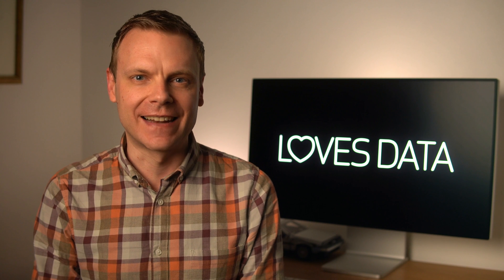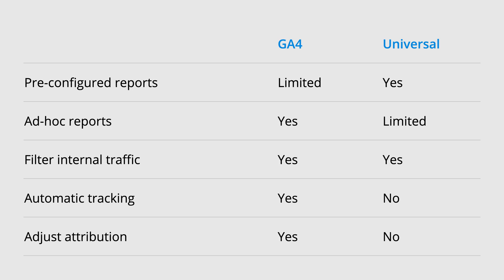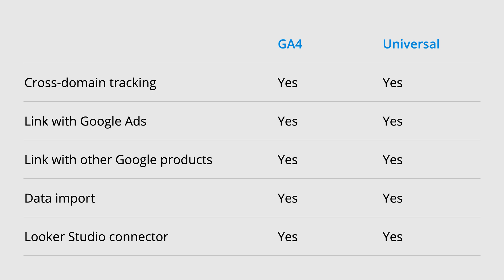Now let's compare some of the most important differences between GA4 and Universal Analytics. GA4 has a limited number of pre-configured reports, while Universal Analytics has a wider range of standard reports. GA4 introduces more ad hoc reporting options to meet your needs. You can filter out internal traffic in both versions. GA4 includes automatic tracking of important actions, while Universal Analytics doesn't. You can also adjust the attribution model in GA4. Both versions support cross-domain tracking — which is actually easier in GA4 — linking to Google Ads and other Google products, importing additional data, and connecting to Looker Studio, previously called Google Data Studio.